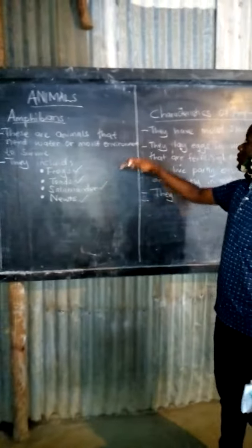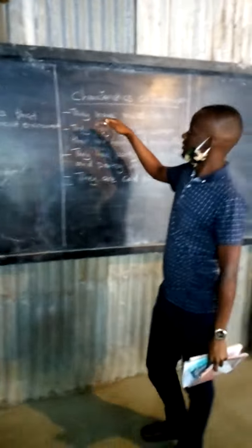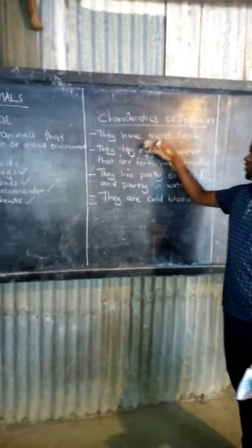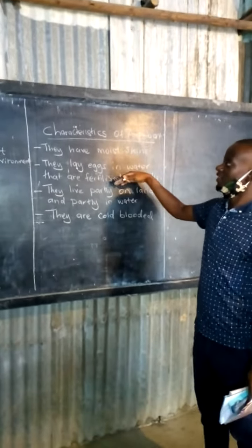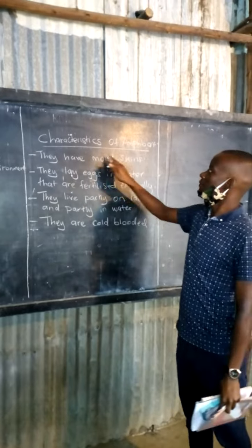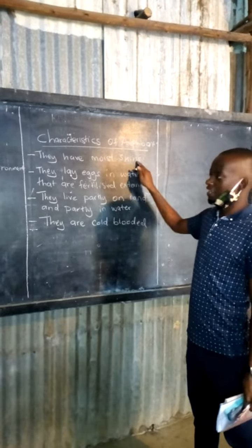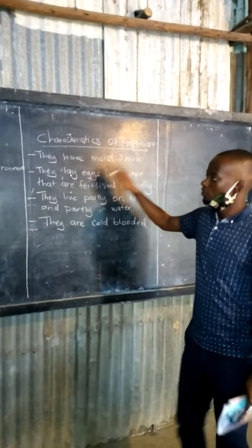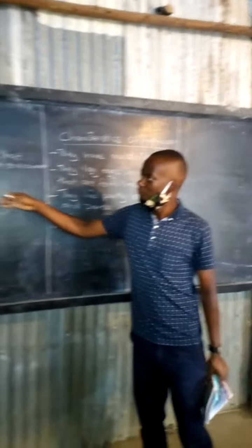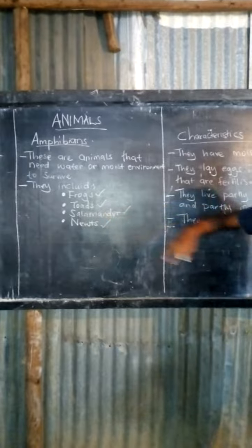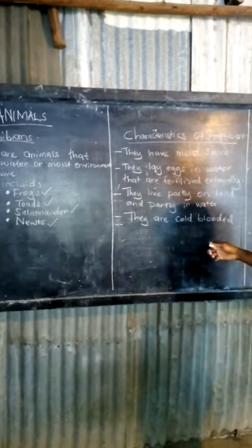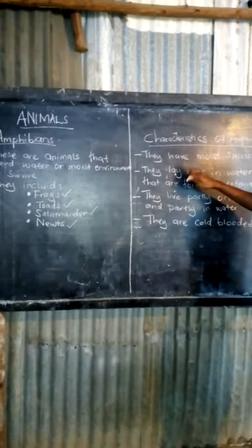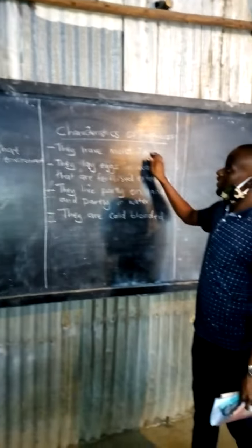Now let us go to the characteristics of amphibians. The first characteristic is that they have moist skin. Most of these animals have moist skin, like the frog — most of you know the frog. So most of these animals have moist skin.